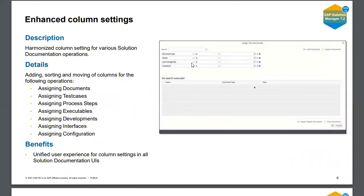SAP has also released some column settings in the solution documentation area, where you can add, sort, or move columns from left to right or right to left. This was possible before, but now all these options are explicitly included. The solution documentation UI has no major change, but if you use different browsers to open it, you may notice it appears a bit faster and more attractive.